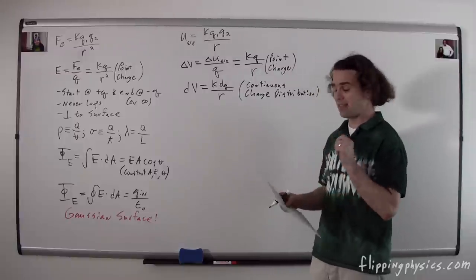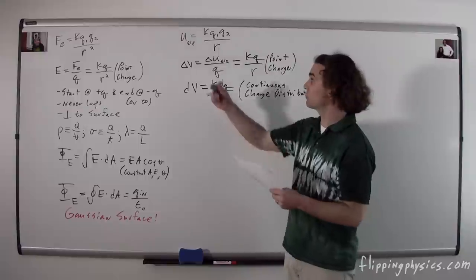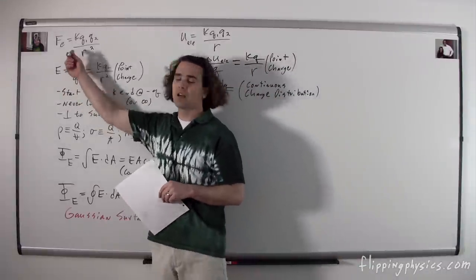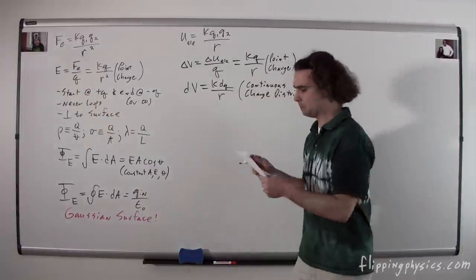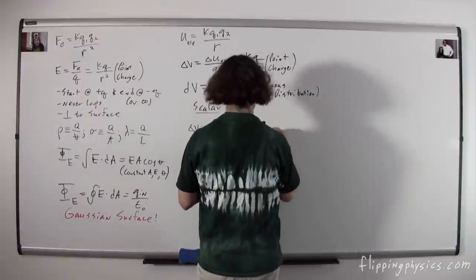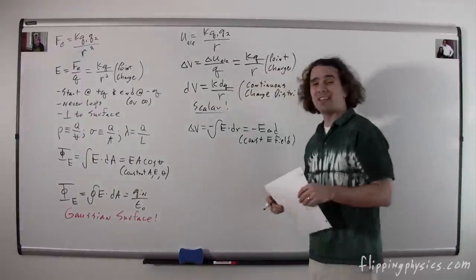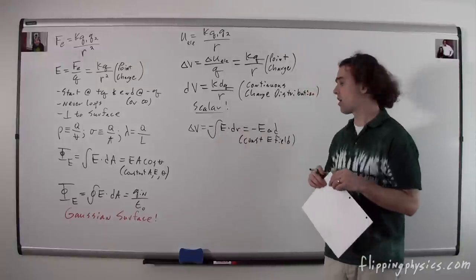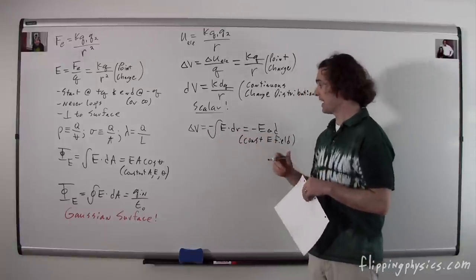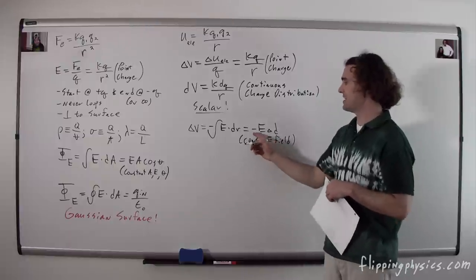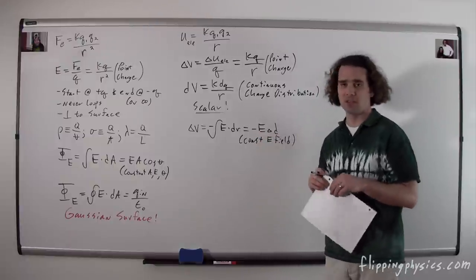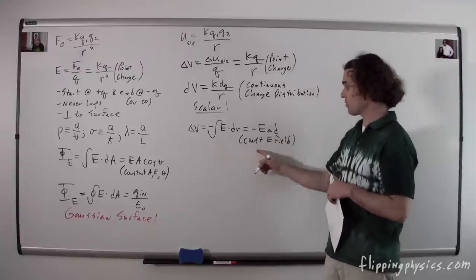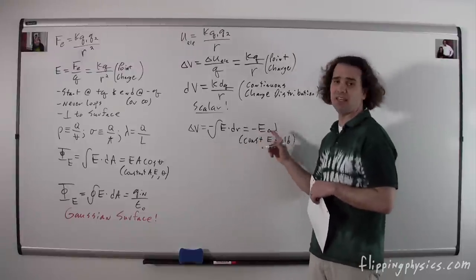Please remember that electric potential difference is a scalar, because it comes from energy, which is a scalar — unlike electric field, which is a vector, because electric force is a vector. The electric potential difference by definition is the negative of the integral of the electric field dot product with dr. In a constant electric field, that works out to be negative E times the change in position: ΔV = −E·Δd.